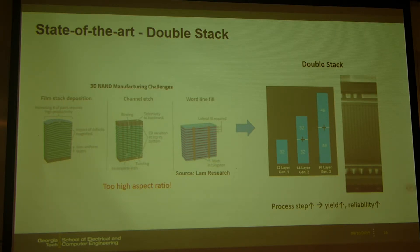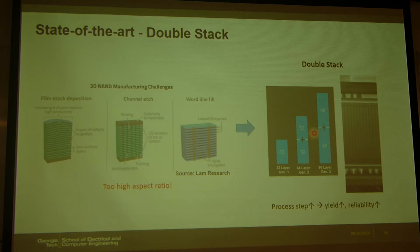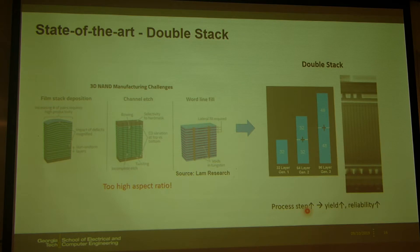So we have to solve that problem. In these days, we use the double stack process. This is one example that Micron is using. If we want to make 64 layers, the hole is actually etched twice. First, we deposit 32 wordlines and etch the hole, then fill the hole with a sacrificial layer. Then we deposit the remaining 32 wordlines and etch again, so the two holes are connected. The process steps are very complicated and time increases, but we can achieve high yield and high reliability.